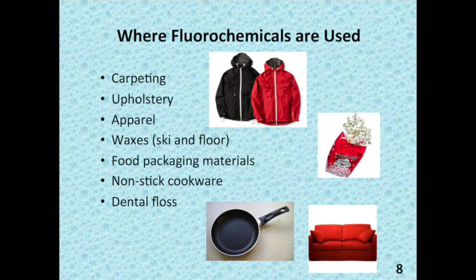On slide eight, you can see the types of consumer articles where fluorochemicals are applied for their oil and water repellency characteristics. These include carpeting and upholstery in homes, offices, automobiles, and schools, along with apparel — both outdoor wear and everyday wear — floor waxes, paper and food packaging, nonstick cookware, paints, and even some types of dental floss. These are just some of the well-known examples of where these chemicals occur in commerce.